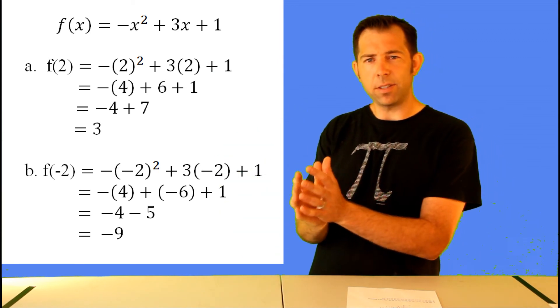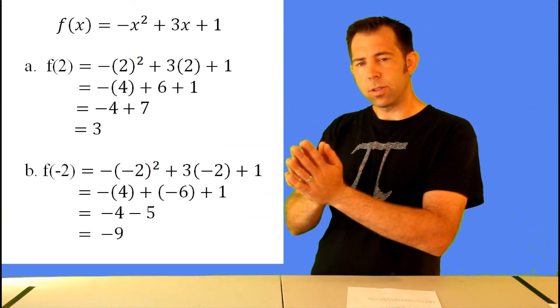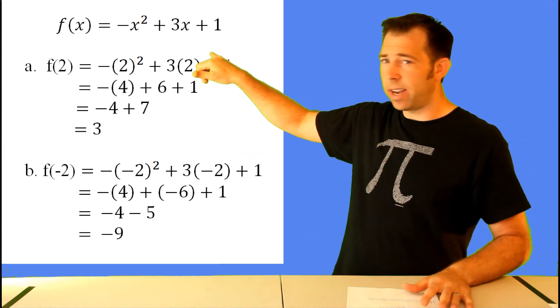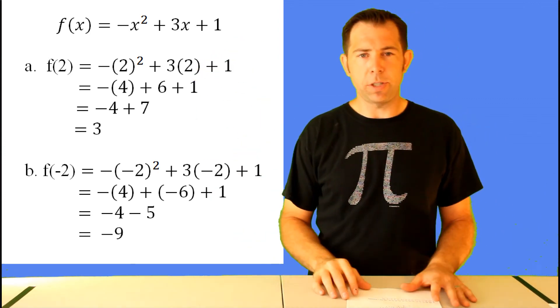Just know that when you put it in parentheses, that is what you're doing first. You're squaring the two and then making it negative. So in this case, we get negative four plus six plus one, which gives you three.